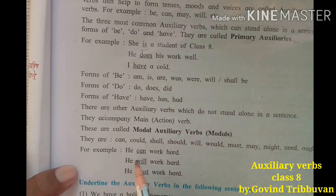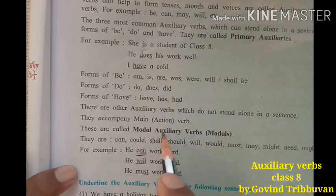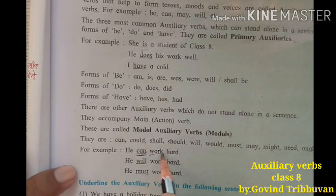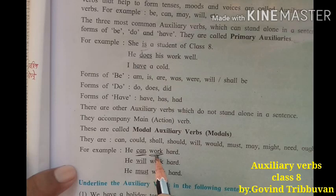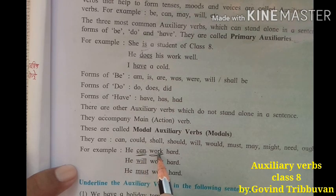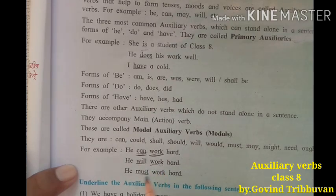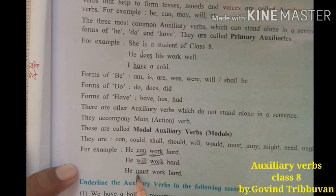For example: 'We can work hard.' 'We will work hard.' 'We must work hard.' In these sentences, can, will, and must are modal auxiliary verbs.